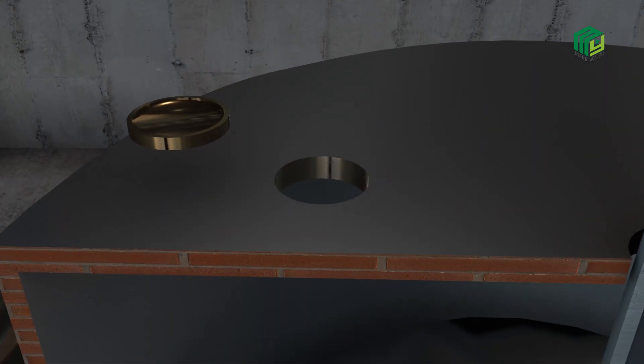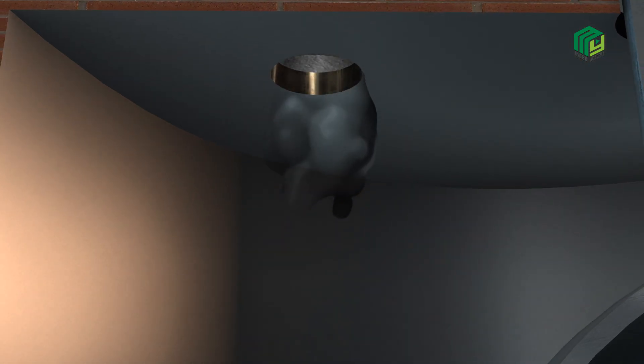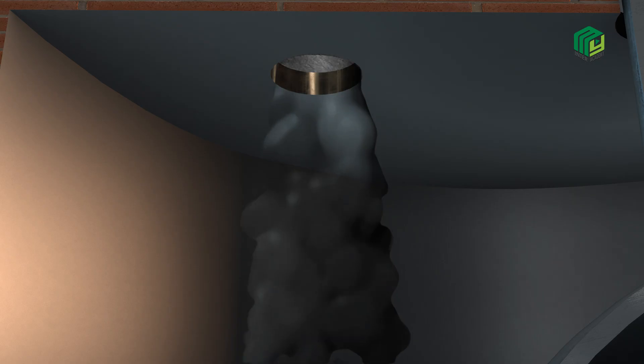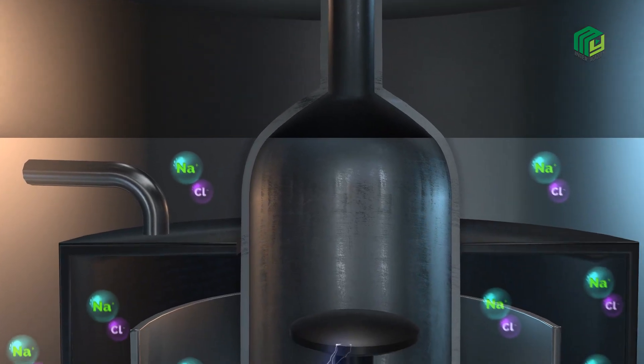A mixture of sodium chloride and calcium chloride is poured in the cylinder. Calcium chloride is added to decrease the melting temperature of NaCl.